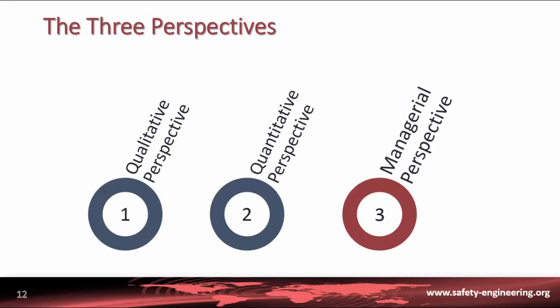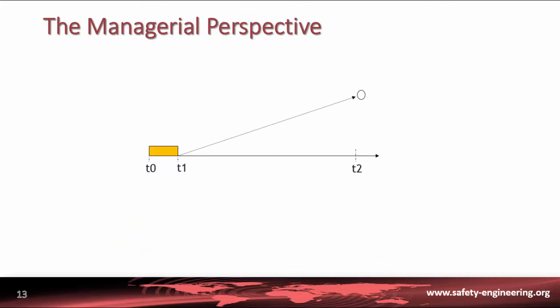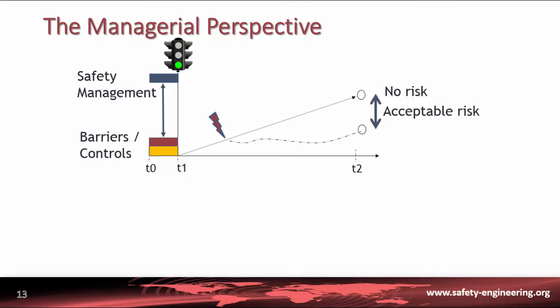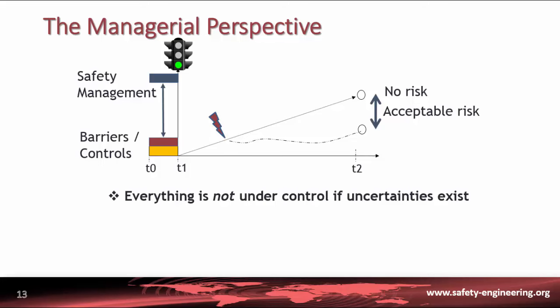Let us examine the last point of view called the managerial perspective. With the previous perspectives, safety is fully managed before T1. From the qualitative perspective, safety management activities aim to make the risk null. From the quantitative perspective, safety management activities aim to make the risk acceptable. So when the action plan starts its execution at T1, we can say the future is under control and these activities can be authorized. Nevertheless, this assertion may be wrong if uncertainties exist.